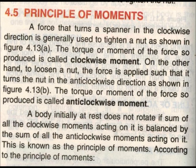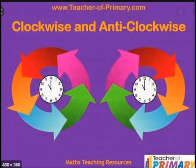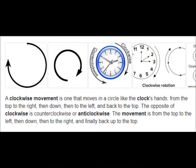We know that different types of movements occur in the body, and basically there are two types of specific movements. One is clockwise and one is anticlockwise. Clockwise goes from 12 to 3, and anticlockwise goes from 12 to 11 to 10 to 9 to 8.